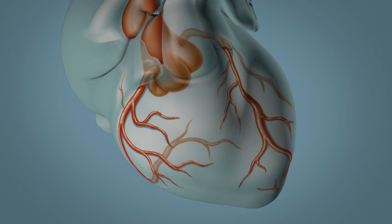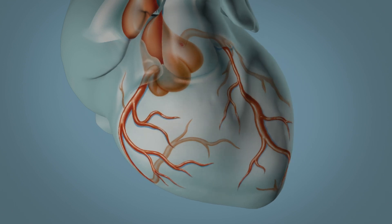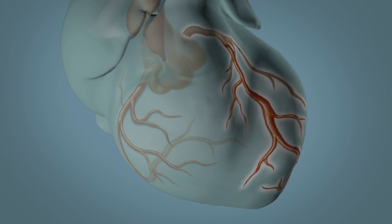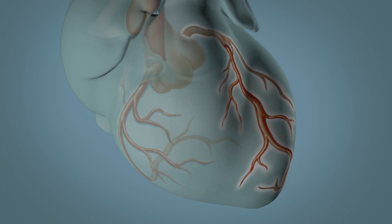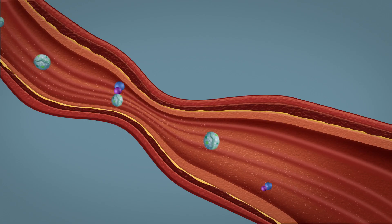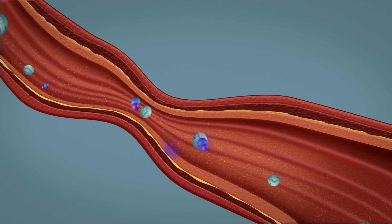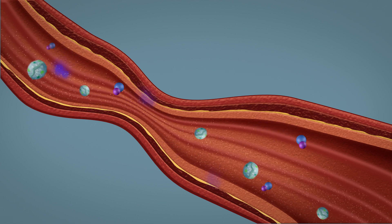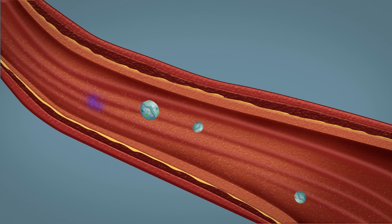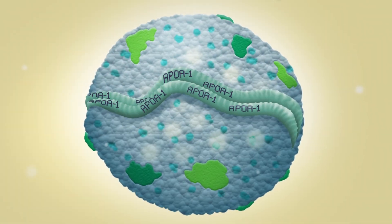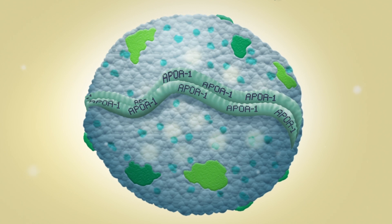HDL also protects the vascular system by preventing LDL oxidation, which leads to the development of arterial plaques and coronary heart disease. HDL also stimulates endothelial nitric oxide production, improving blood flow through vasodilation.